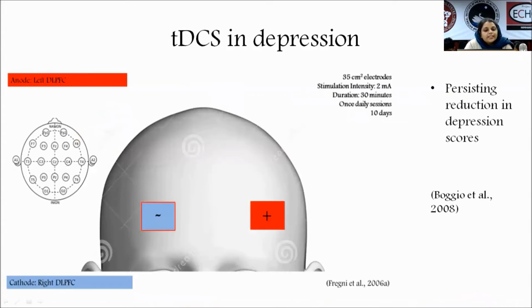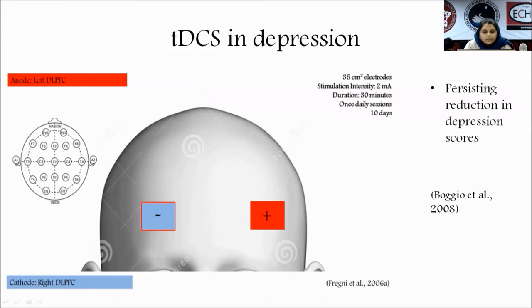In tDCS for depression, the anode — which is stimulatory — will be placed over the left dorsolateral prefrontal cortex. Stimulation of the left DLPFC is known to improve depression. Electrode size and stimulation intensity remain the same, but it is given once daily for 10 days with a duration of 30 minutes.